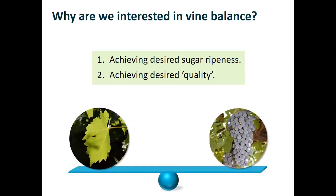With that definition of vine balance, why are we interested in it? There are really two reasons. One is to achieve a certain sugar ripeness for winemaking — the concern about this depends on the region and how difficult it is to get fruit ripe. The second, and the one we're mainly going to address today, is achieving a desired quality. Can we use vine balance to get a specific quality in our fruit?